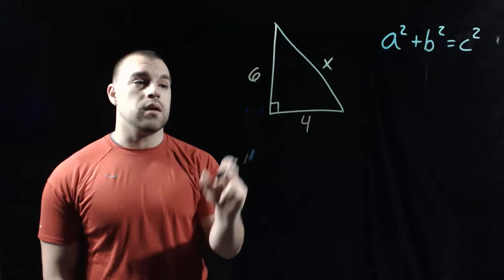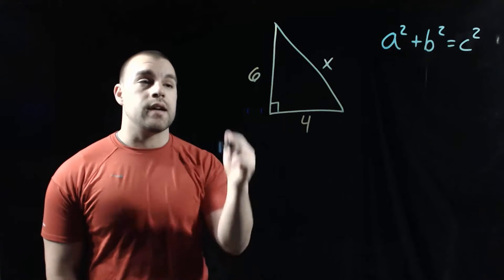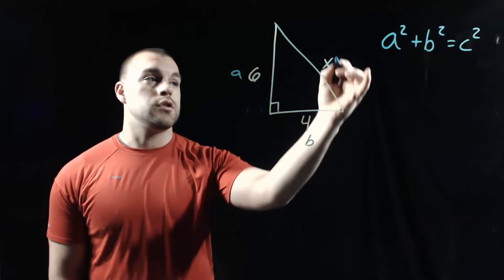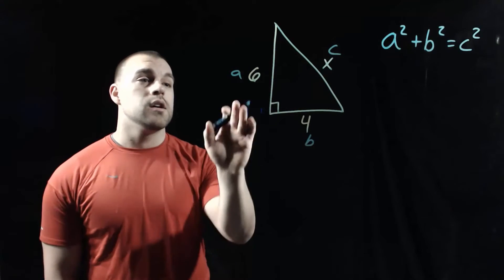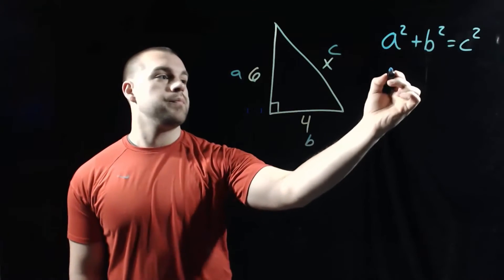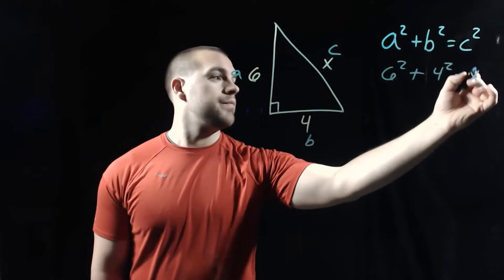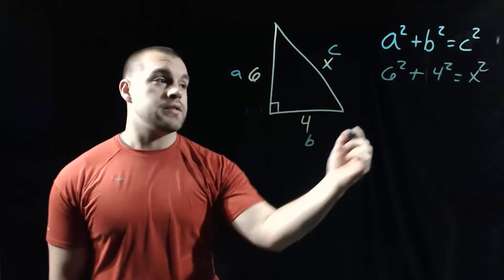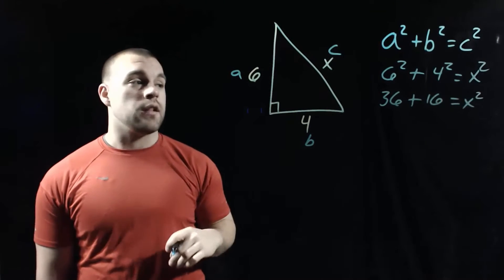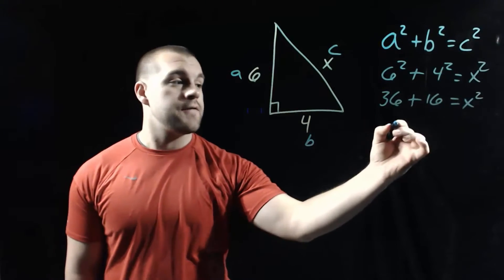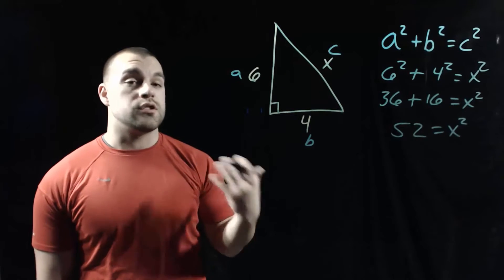In this example, I've changed the picture a little bit. Now we've got legs of 6 and 4, but we're still missing the hypotenuse. Just like we did in the last example, I'm going to label these sides, making sure that I call the hypotenuse C. I labeled the 6 as my A value and the 4 as my B value, and again we've got X as our C value. On the left side, 6 squared is 36 and 4 squared is 16. Combining like terms, 36 plus 16 is 52. We have to get X all by itself, so we're going to square root both sides.